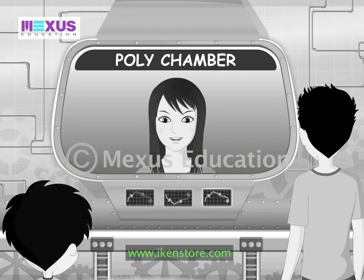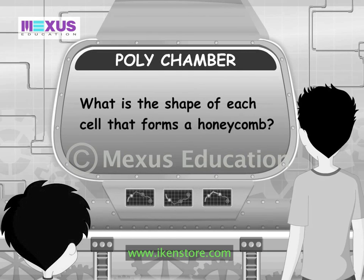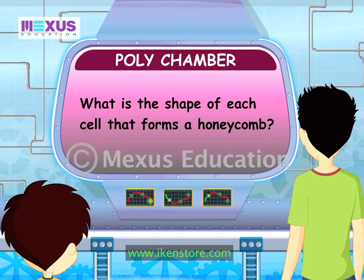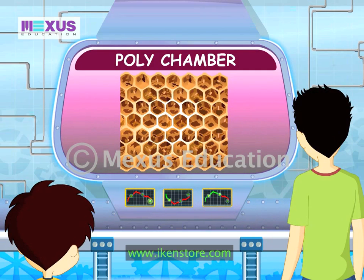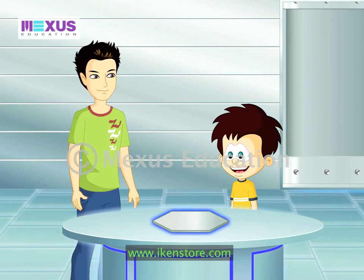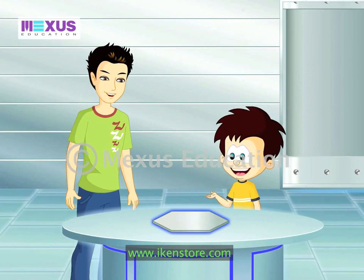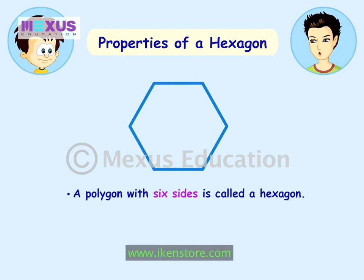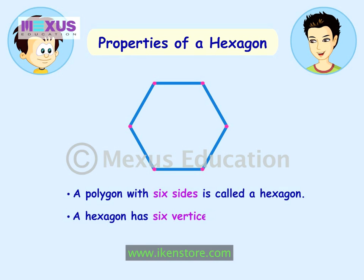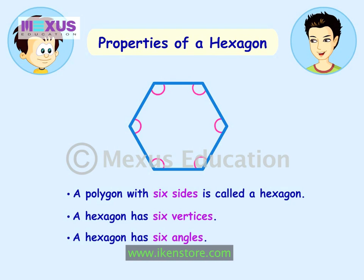The second question is: What is the shape of each cell that forms a honeycomb? It's a hexagon. A polygon with six sides is called a hexagon. Also, a hexagon has six vertices and six angles.